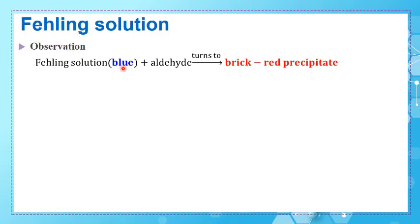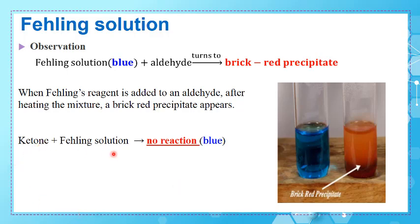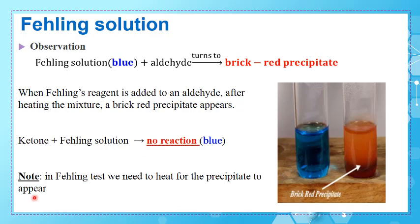The second test used to distinguish aldehydes from ketones is Fehling's solution. Fehling's solution is blue; when added to an aldehyde and heated, a brick-red precipitate appears, giving a positive result. When Fehling's solution is added to a ketone and heated, no reaction occurs, the result is negative, and the color stays blue. Always keep in mind that heating is required for the precipitate to appear — you must mention this when asked to describe this test.